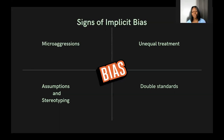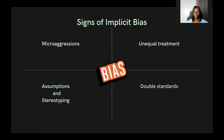Another sign is assumptions — completely assuming that every single person should behave, think, or see things from your own perspective is a way of imposing your beliefs on others, which can be offensive and is a sign of implicit bias. Double standards are also a sign — where you normally wouldn't accept certain activities, but you let them slide for a particular individual or group. These double standards appear in how we make judgments, interact, and give feedback.